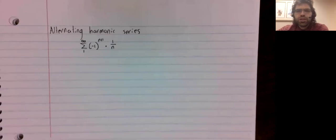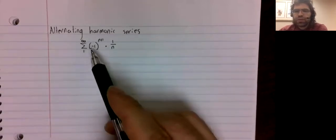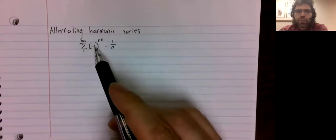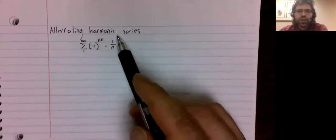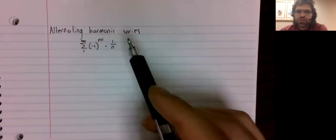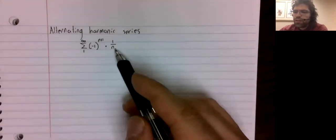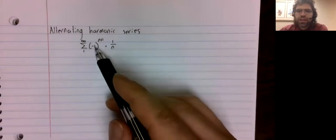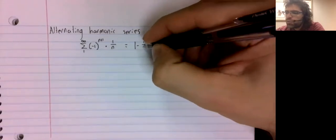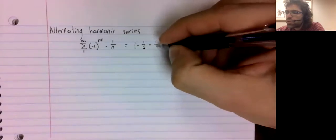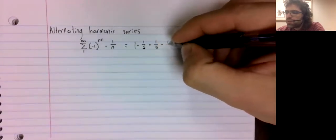Let's do an example with the alternating series test. Very frequently alternating series have this form: negative 1 raised to either the n or the n plus 1, times some terms. As long as these terms are always positive, this negative 1 to a power will produce an alternating series.